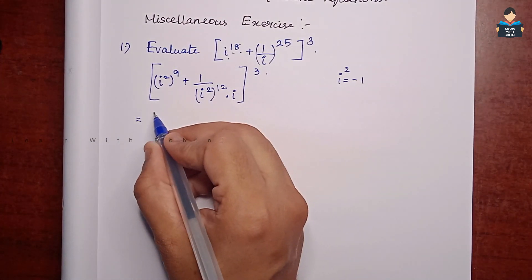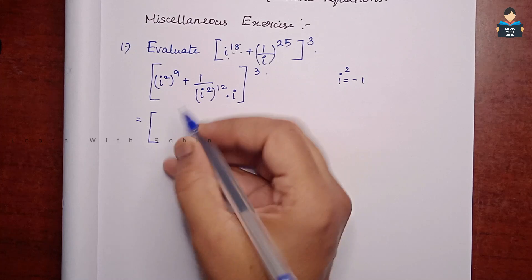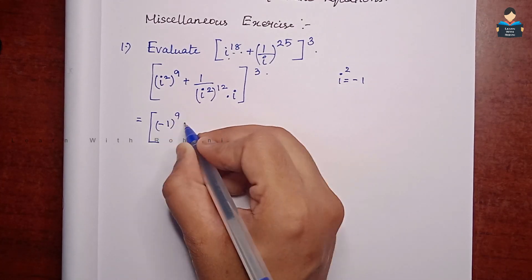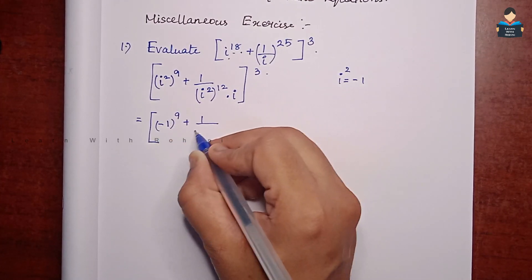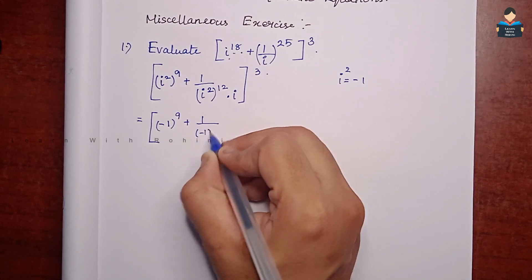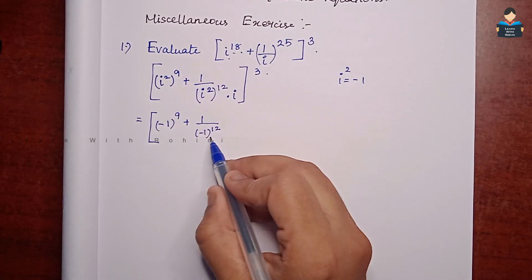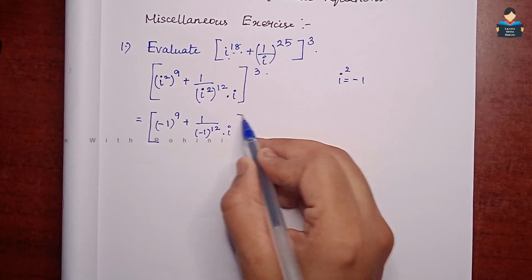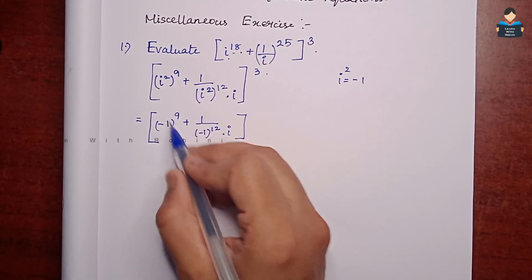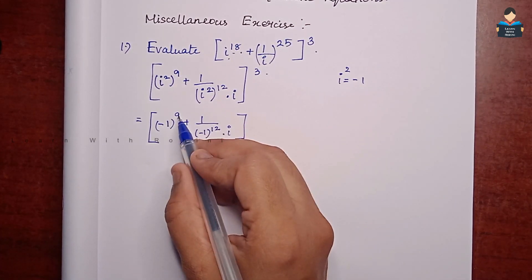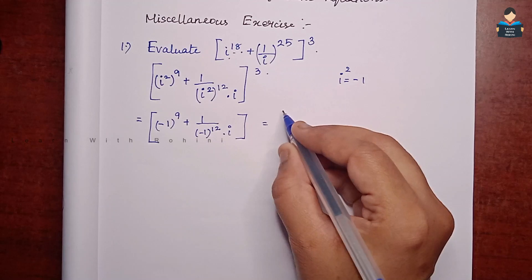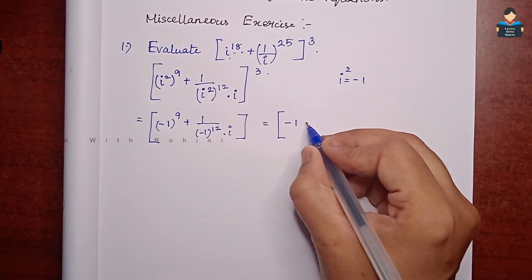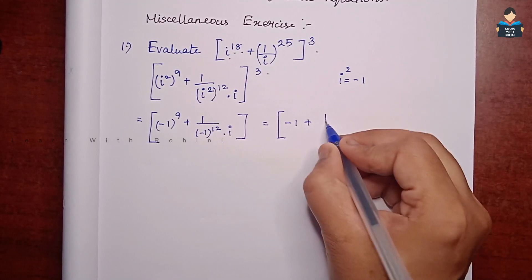So (i square) the whole power 9, plus 1 by (minus 1) the whole square, to the power 12 into i. Now here the exponent is an odd number, so when it is odd, minus 1 to that power gives minus 1. So i to the 18 equals minus 1.